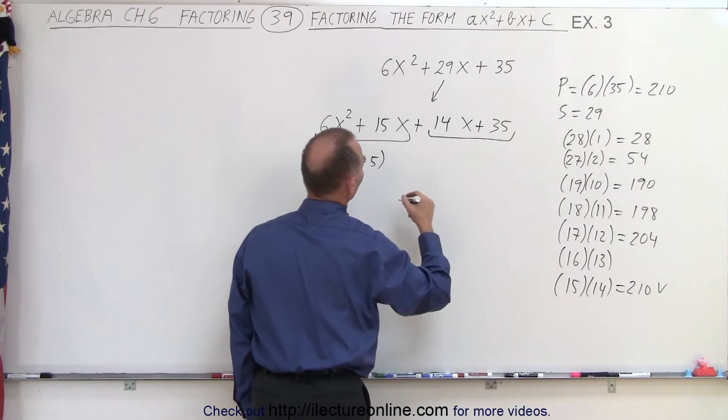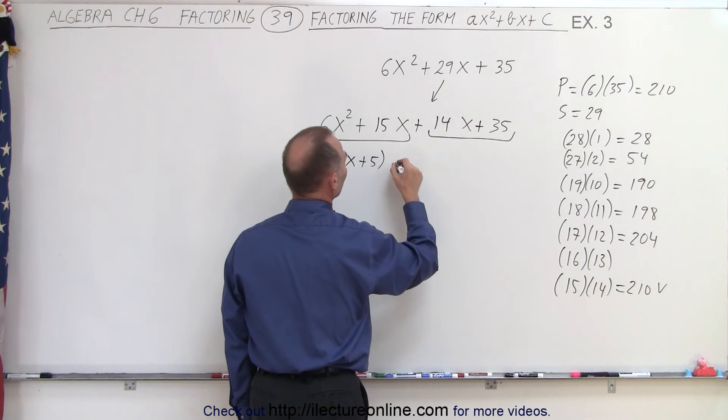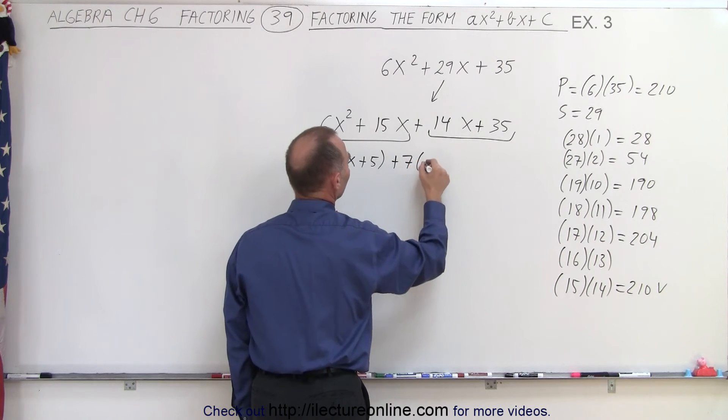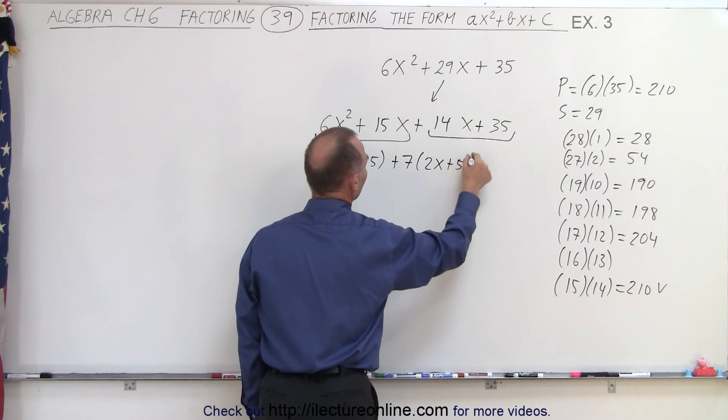And here I can factor out a 7. I should put a plus there—plus 7 times 2X plus 5. And then notice,